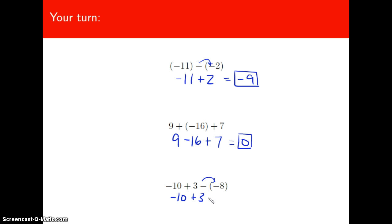And here, -10 + 3 - (-8). I see the two signs again. So minus a negative means the same thing as a positive. So let's rewrite this last term as positive 8. And now I have -10 + 3, which is -7. Again, -7 + 8 is 1. How did you do? Hopefully you did very well.